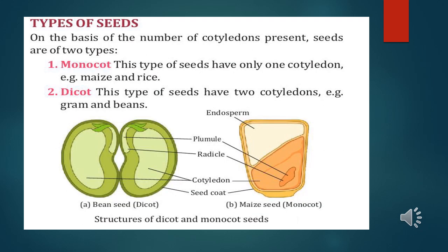Types of seeds — on the basis of the number of cotyledons present, seeds are of two types: monocot and dicot. In monocot seeds there is only one cotyledon; examples are maize and rice. In dicot seeds there are two cotyledons; examples are gram and beans. You can see in the figure: bean seed is dicot with two cotyledons, and maize seed is monocot with one cotyledon.